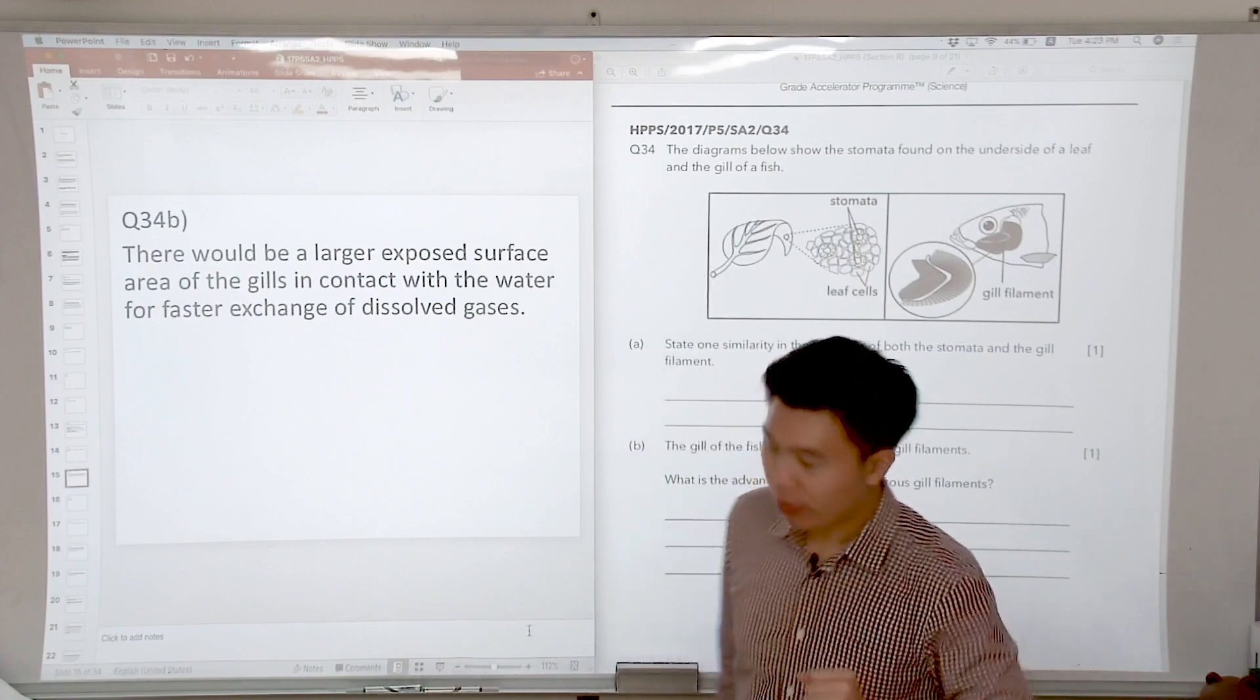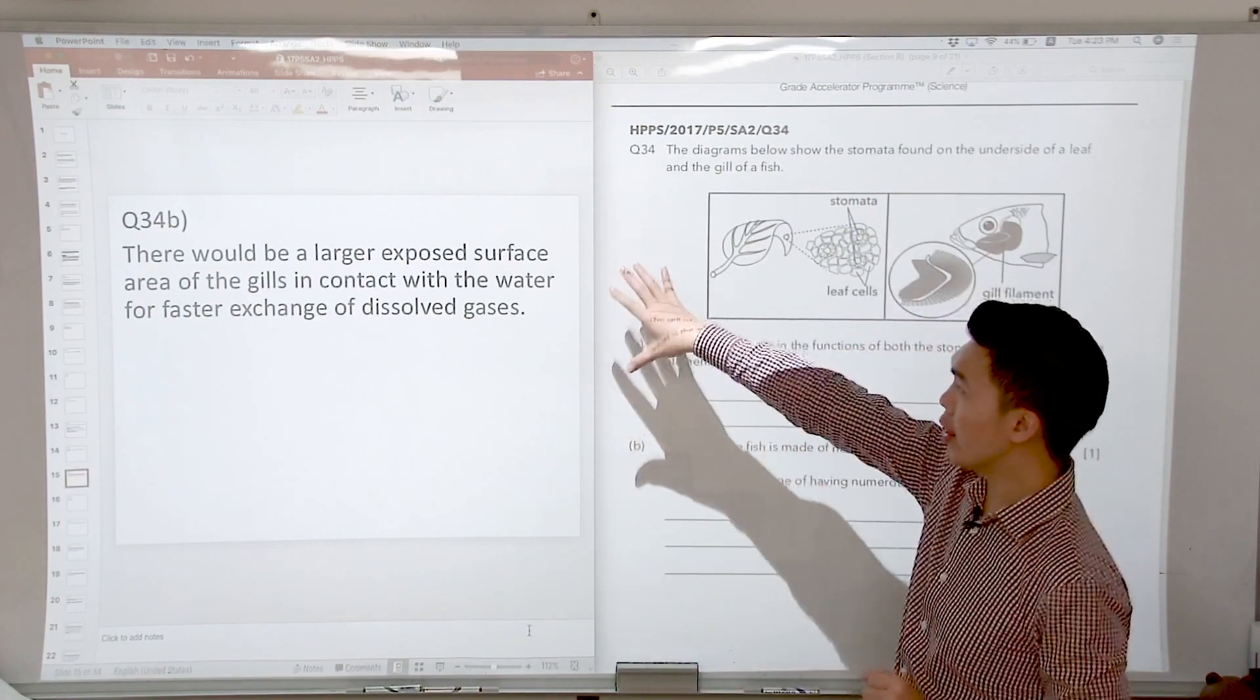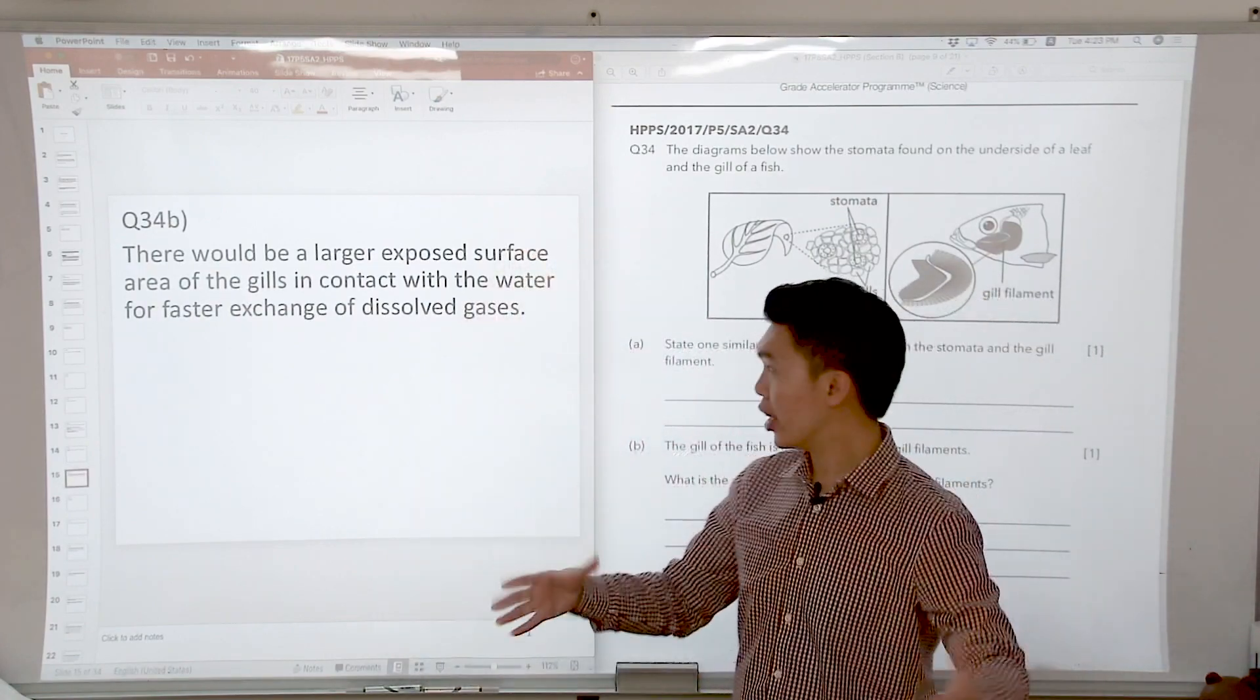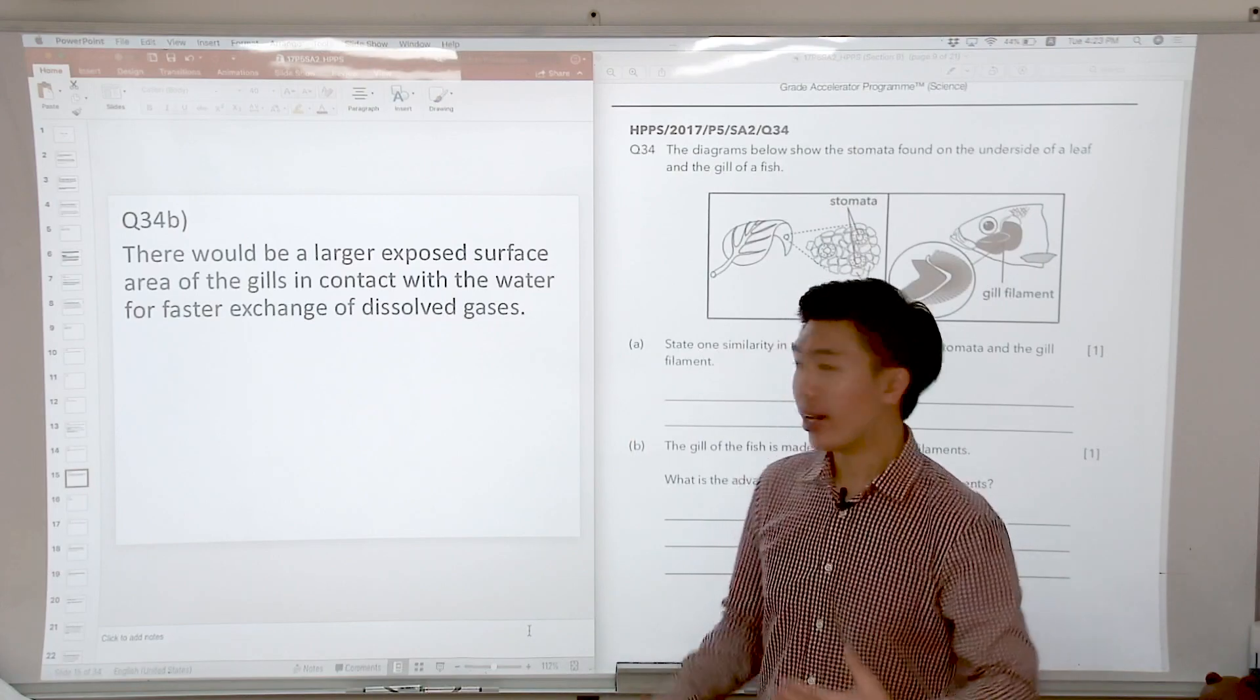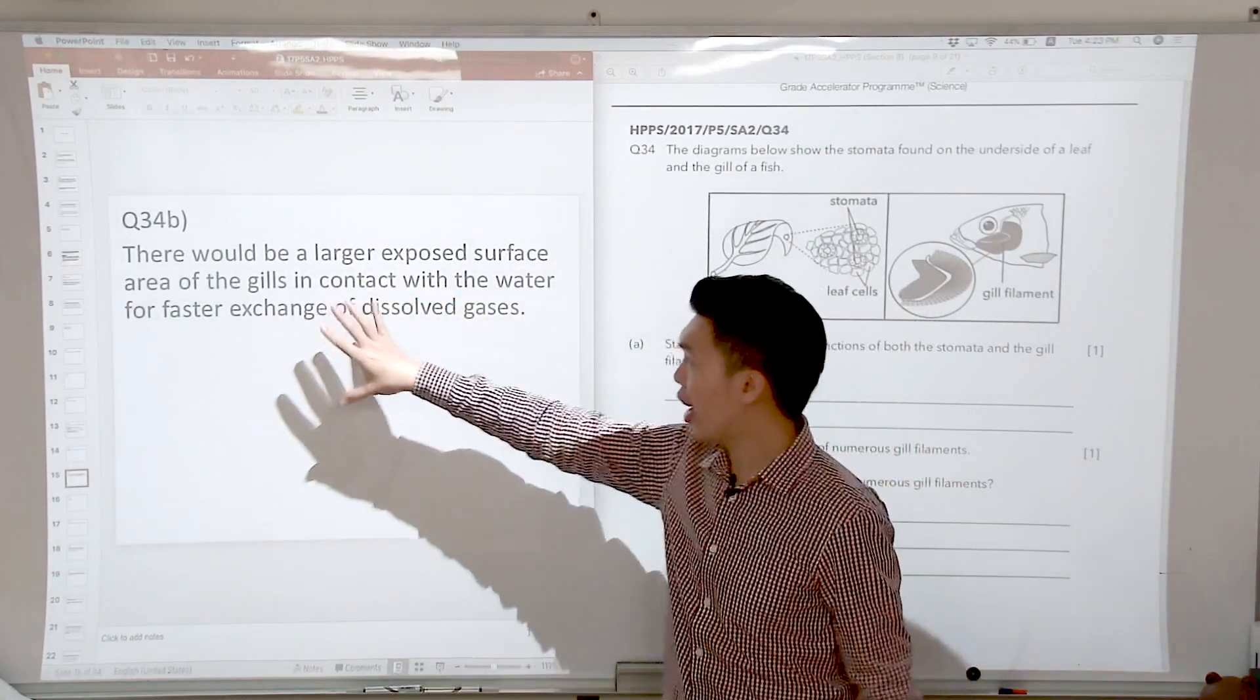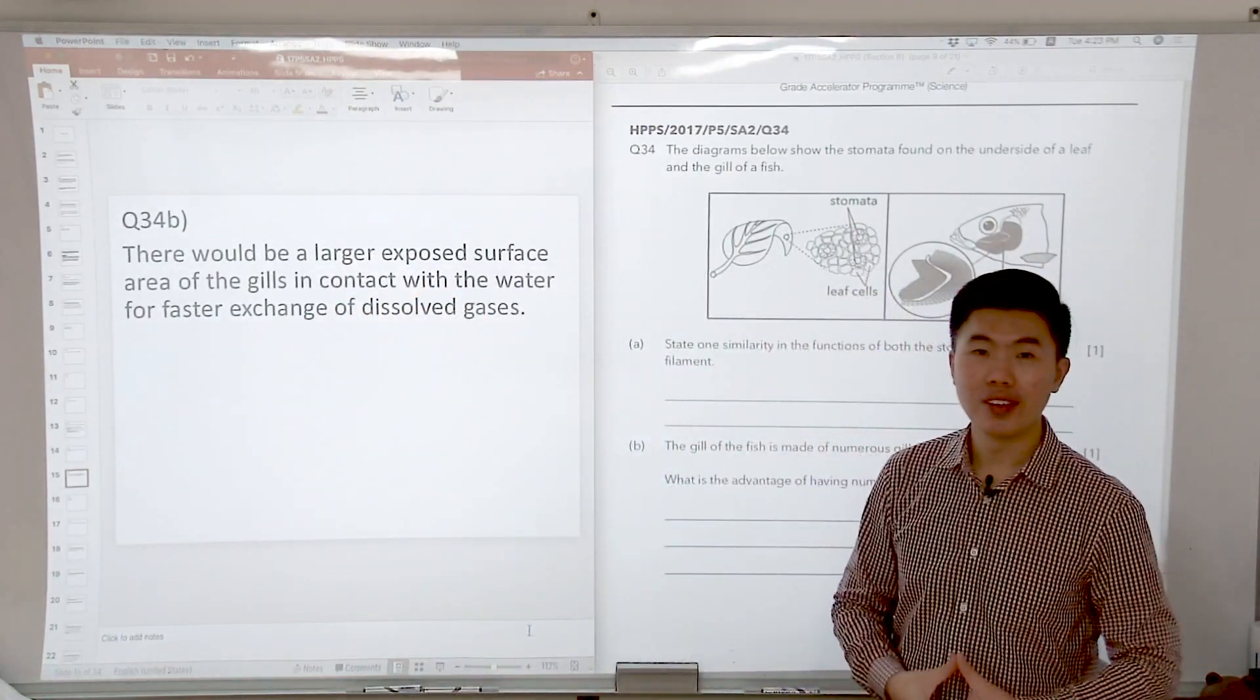So we say that the gill filaments increase the exposed surface area of the gills in contact with the water so that they can have faster exchange of dissolved gases.